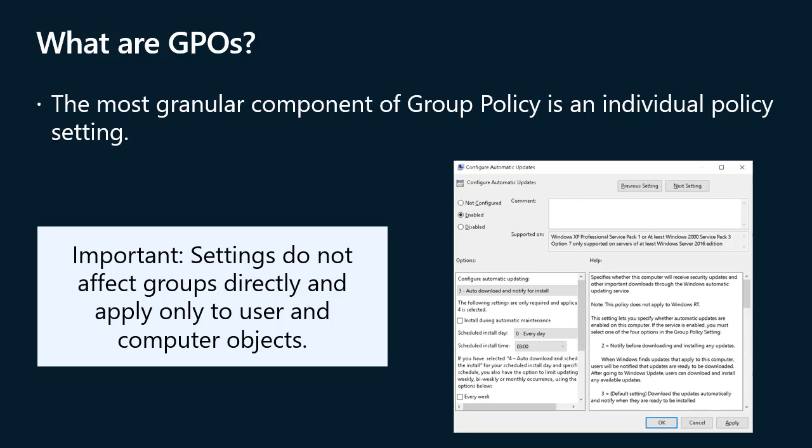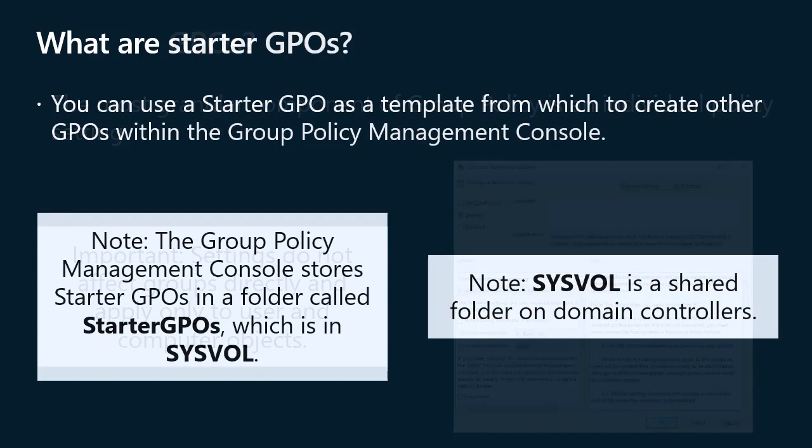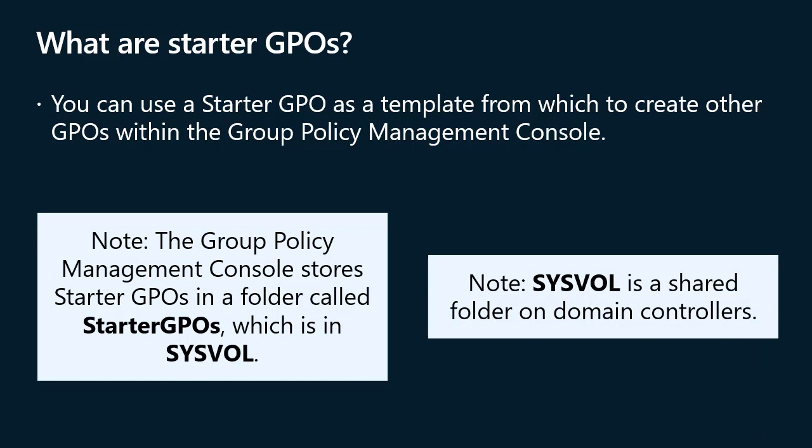GPOs display in a container named Group Policy Objects. The next two levels of the hierarchy are nodes named Policies and Preferences. The Group Policy Management Editor displays folders called nodes or policy setting groups, with policy settings listed within those folders. You can use a Starter GPO as a template to create other GPOs within the Group Policy Management Console. Starter GPOs only have administrative template settings and might already have specific settings that are best practices for your environment. You can export and import Starter GPOs to and from cabinet .cab files. The Group Policy Management Console stores Starter GPOs in a folder called Starter GPOs in SysVol, which is a shared folder on domain controllers.